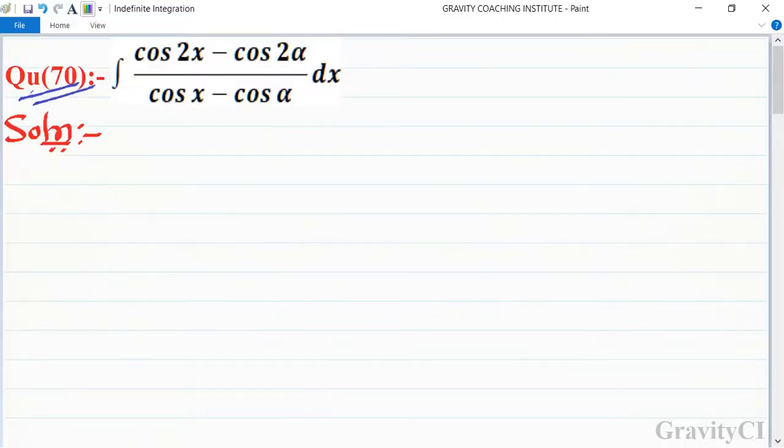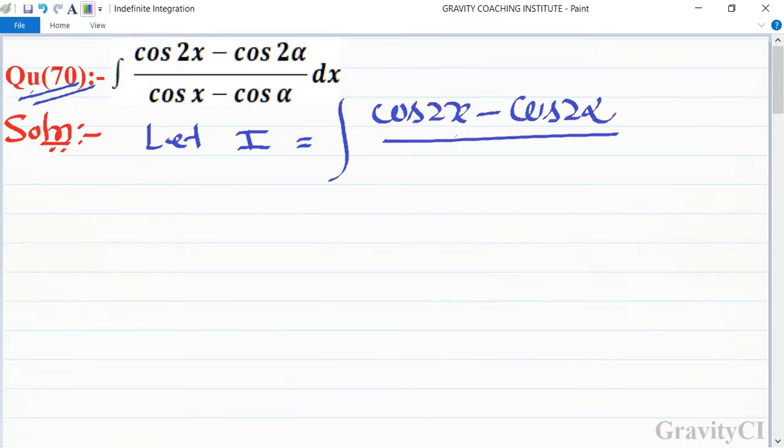Chapter indefinite integrations, question number 70: integrate cos 2x minus cos 2 alpha upon cos x minus cos alpha dx. So first let integration I equal the integral of cos 2x minus cos 2 alpha upon cos x minus cos alpha.